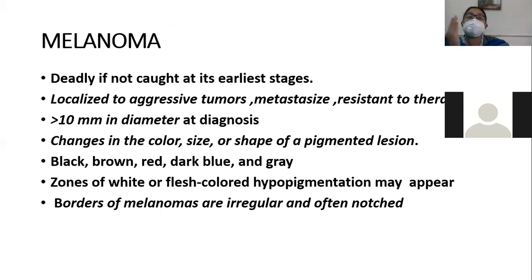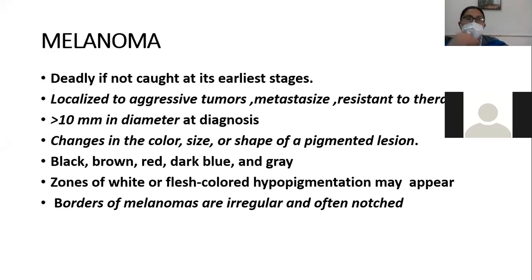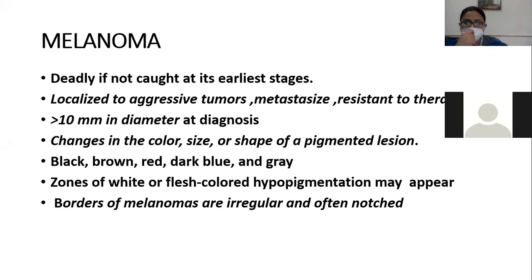Melanoma is mostly more than 10 mm in diameter at diagnosis. Keep this in mind: if a lesion is less than 6 mm, it is most likely a nevus; but melanoma is more than 10 mm. There are changes in color, size, or shape of a pigmented lesion — black, brown, red, dark blue. Zones of white or flesh color, hyperpigmentation may be seen. The borders of melanoma are irregular and often notched.